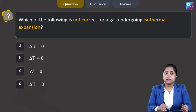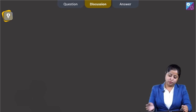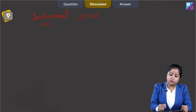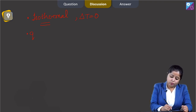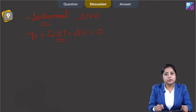Which of the following is not correct for a gas undergoing isothermal expansion? For isothermal conditions, we know that ΔT = 0. Since ΔU = Cv·ΔT, and ΔT = 0, we get ΔU = 0.